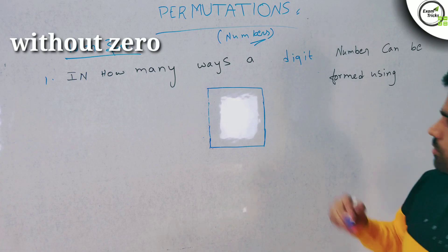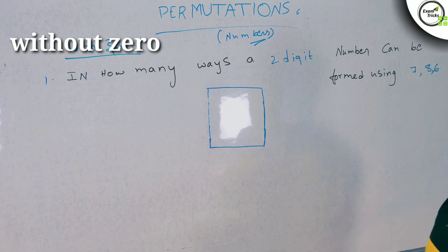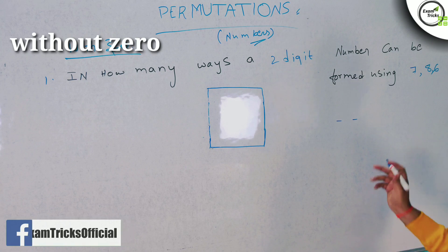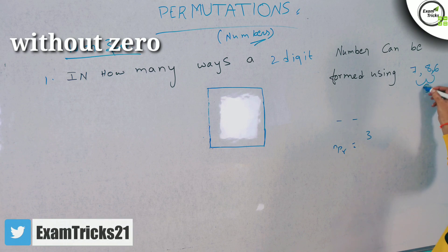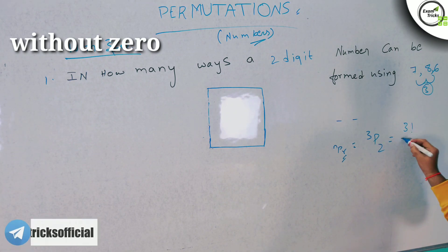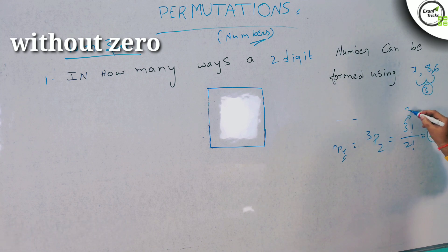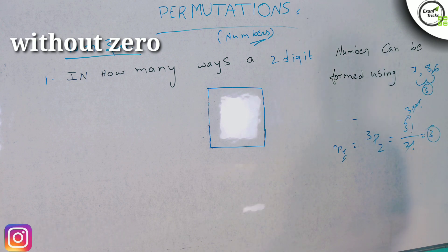Next question: in how many ways can a 2-digit number be formed using 7, 8, 6? We have 3 digits and need to fill 2 places. Using the NPR formula, that is 3P2, which equals 3 factorial divided by (3 minus 2) factorial, which is 3 factorial divided by 1 factorial. So 3 into 2 factorial divided by 1 gives us 6 divided by 1 equals 6.